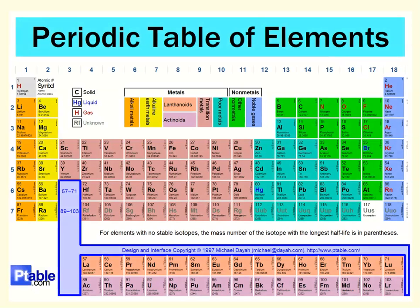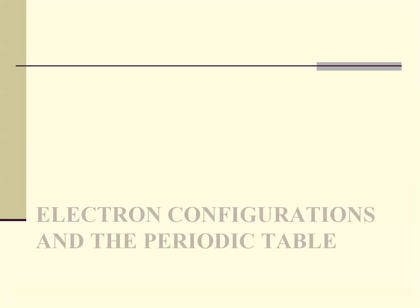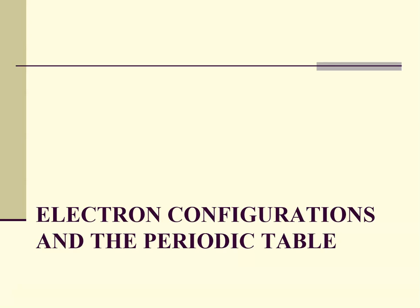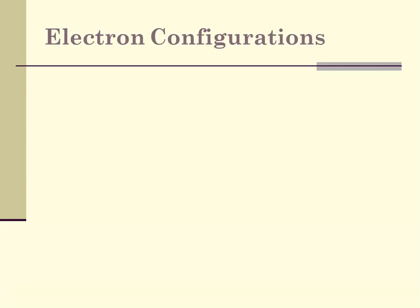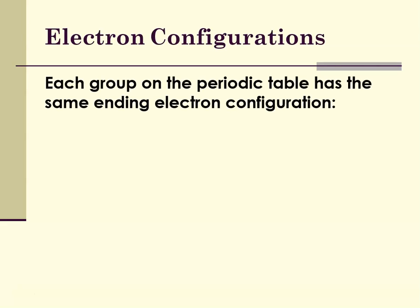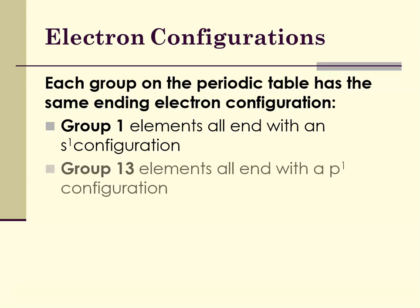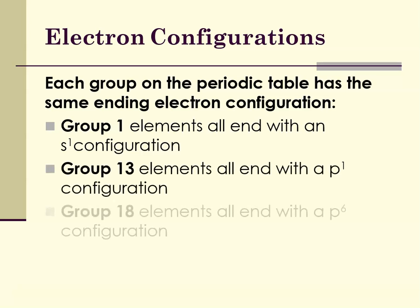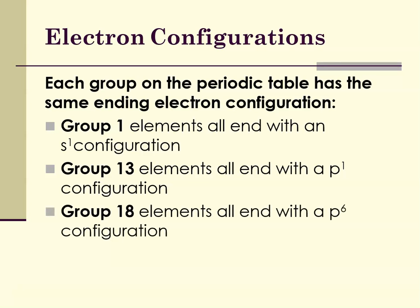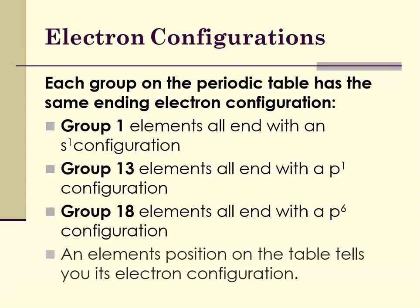Here's another big periodic table with lots of information. Let's talk briefly about electron configurations and the periodic table. Each group on the periodic table has the same ending electron configuration. Group 1 elements all end with an S1 configuration — one S electron. Group 13 elements all end with a P1 configuration. Group 18 elements all end with a P6 configuration. An element's position on the periodic table tells you its electron configuration.